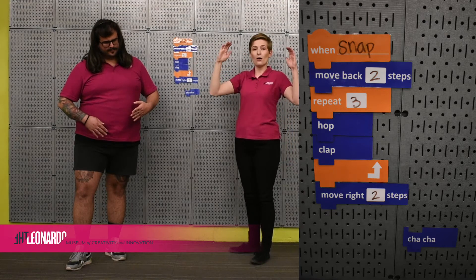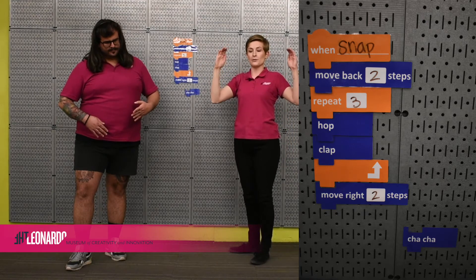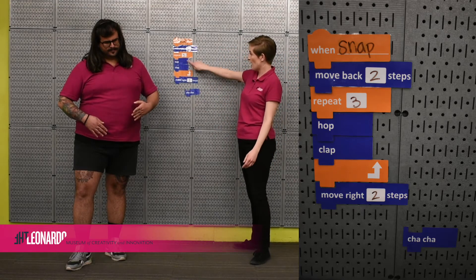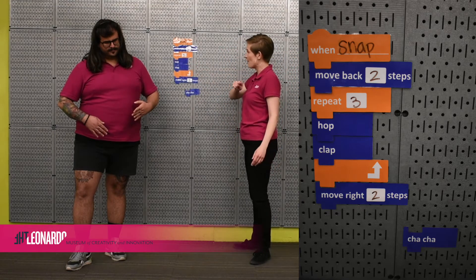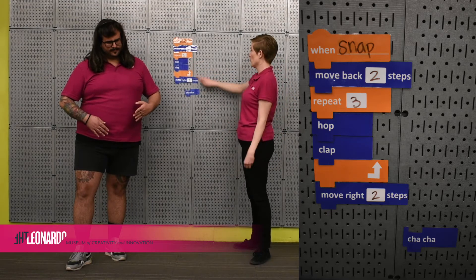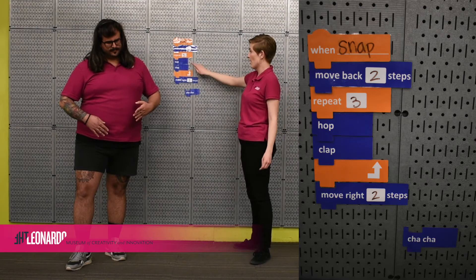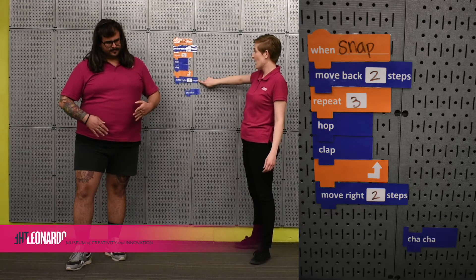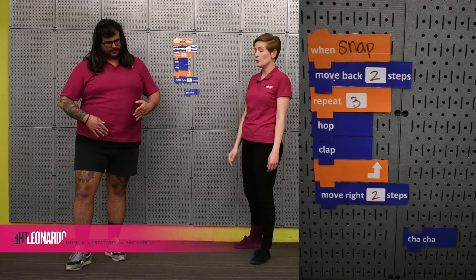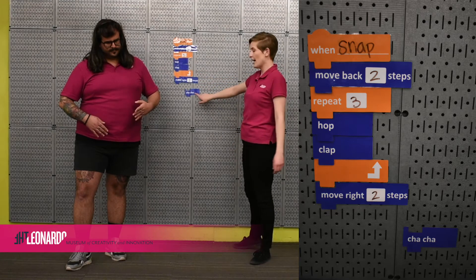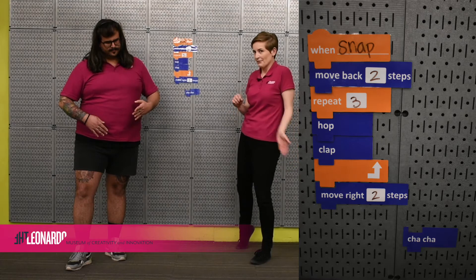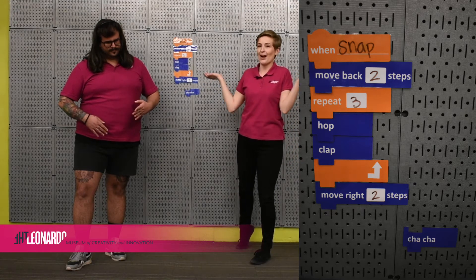Then I have a repeat sequence — it's almost like parentheses, telling you exactly what to focus on inside. What my robot needs to repeat is a hop and then a clap, and he has to do that three times: hop back, hop back, hop back. After that I'm asking him to move right two steps, and then I want him to cha-cha.